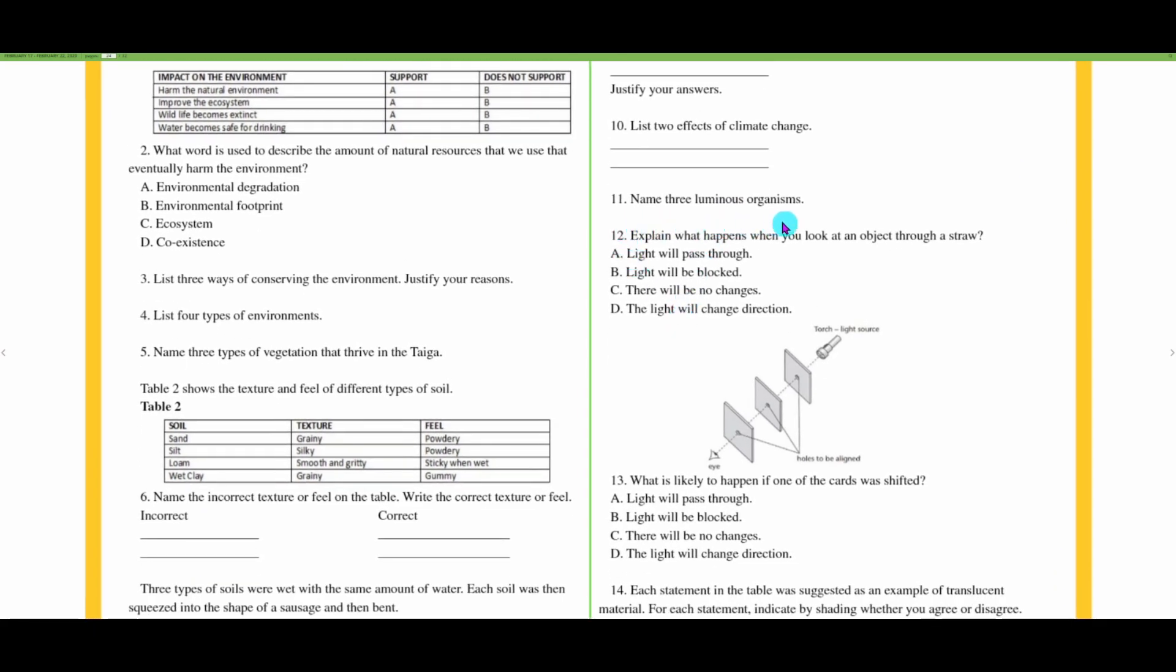Number eleven: name three luminous organisms. The firefly comes to mind, Peeni Walli. Then we have glow worms and certain species of shrimp, krill, and jellyfish that are also luminous.